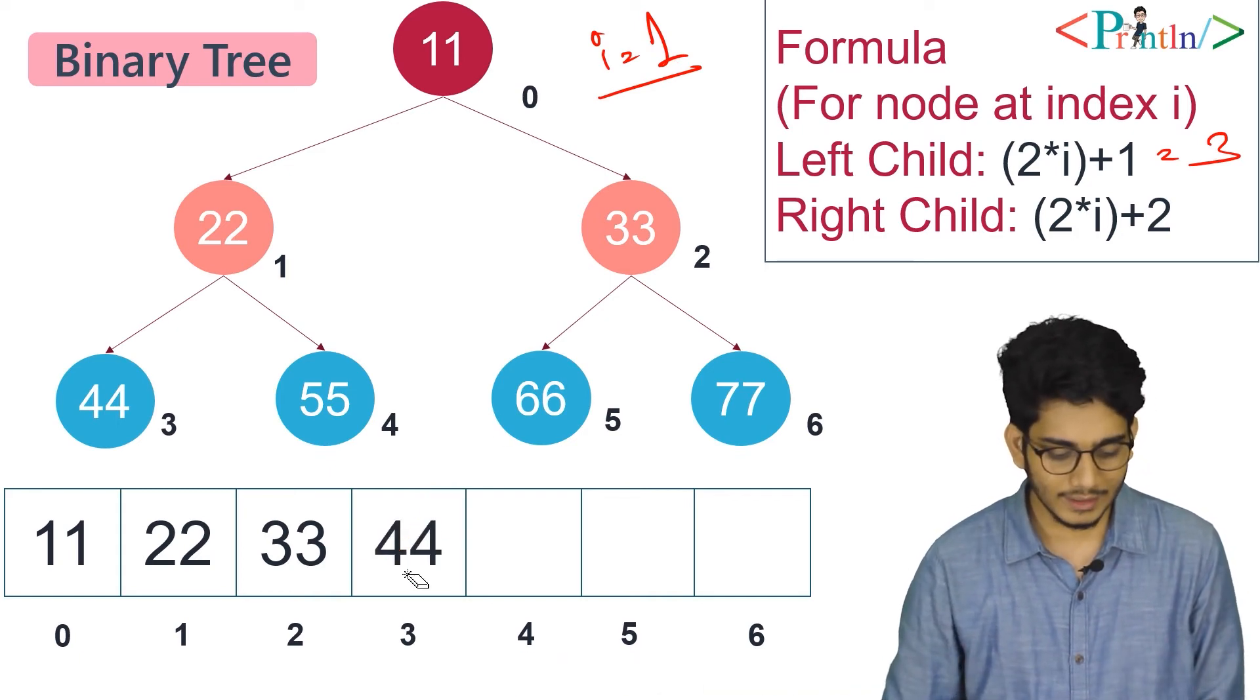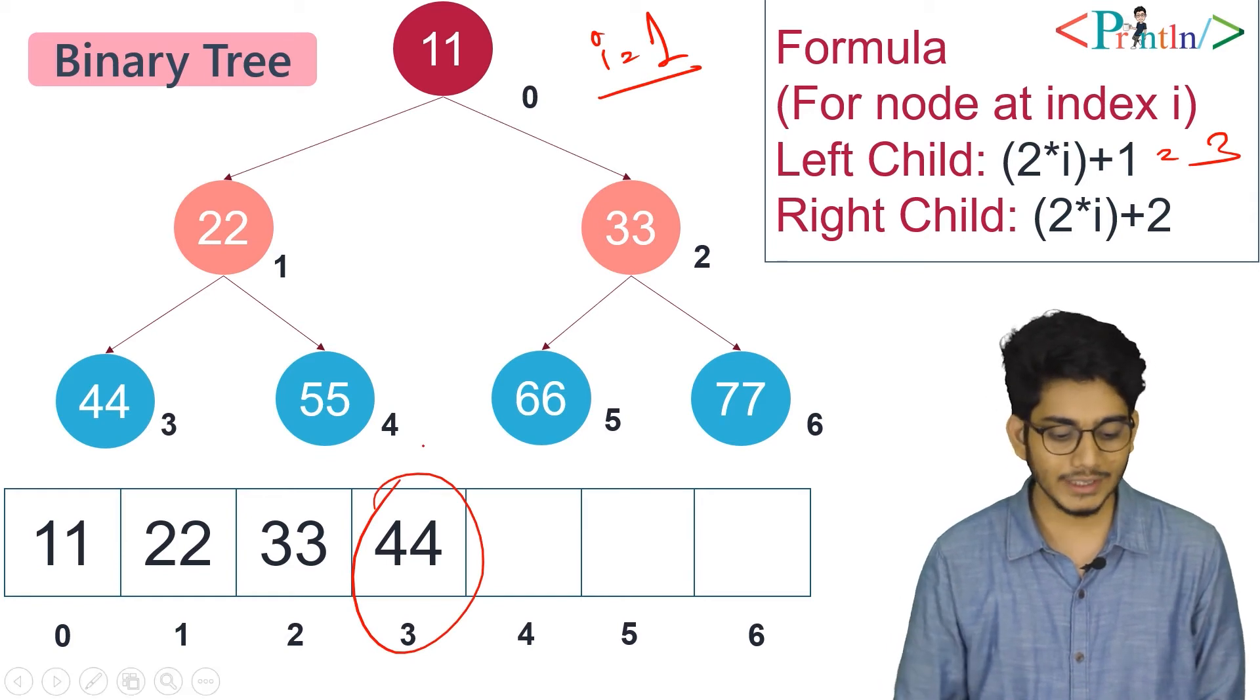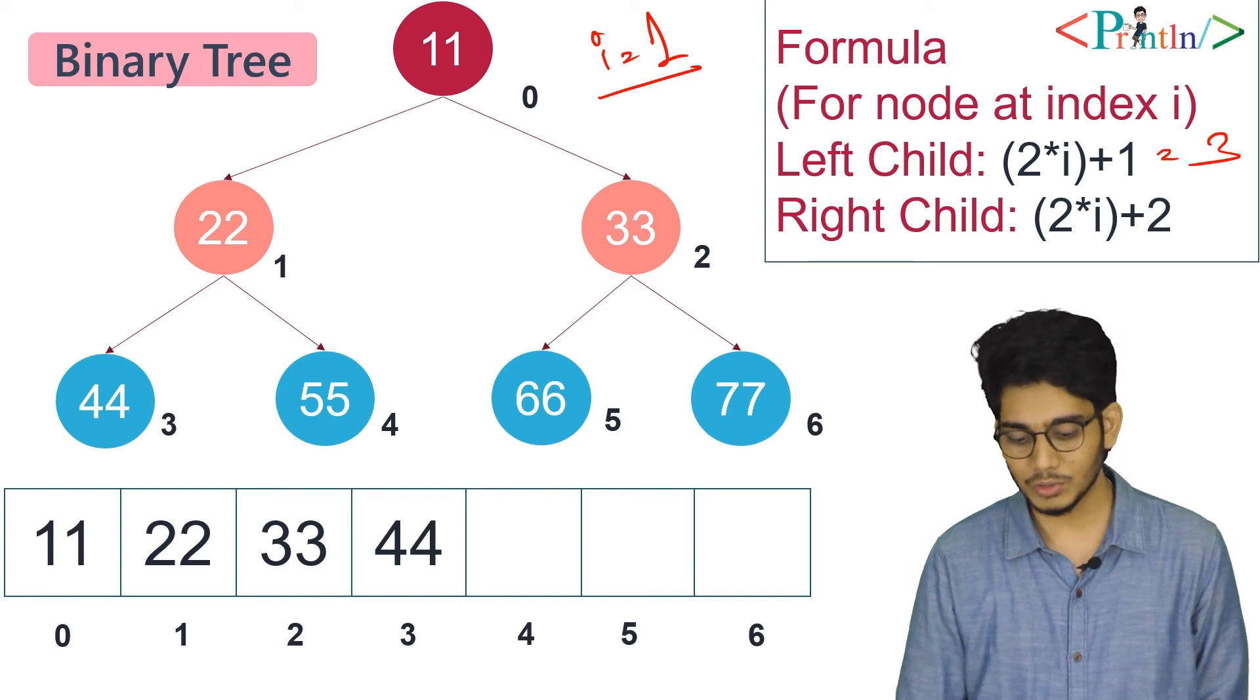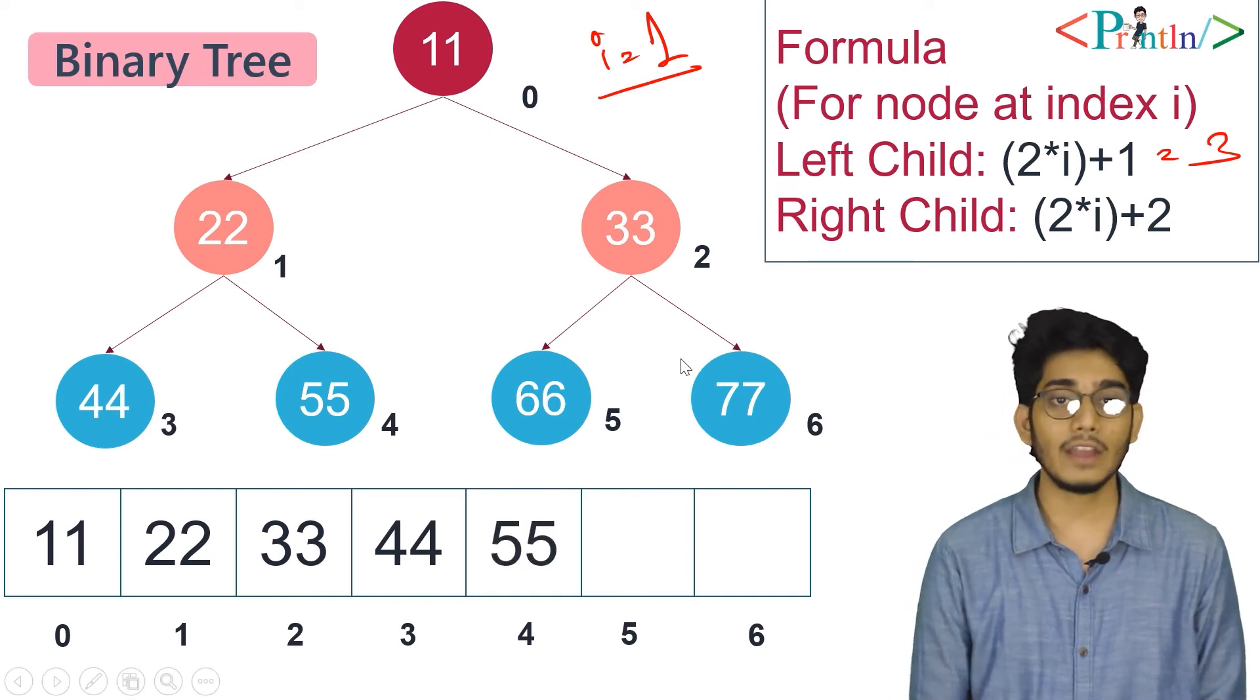44 is at index 3. Now if we're trying to insert 55, the value of i is still 1. 1*2 = 2, plus 2 = 4, so we'll insert 55 at position 4.